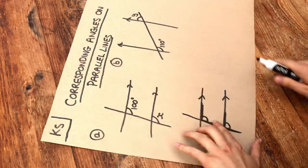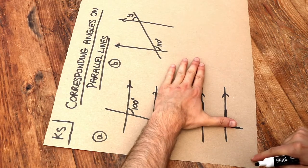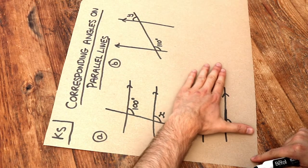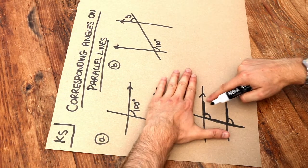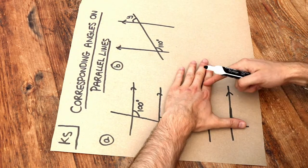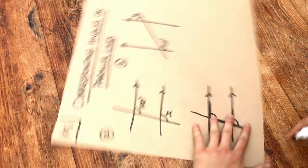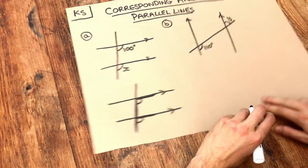And the way I like to spot these is if you imagine putting your two fingers on this angle here, then if you shift your hand without adjusting the angle from one parallel line to the other, can you see that that angle is not going to change because my fingers are staying still, it's only my hand that's moving. So we can see those angles are going to be the same.